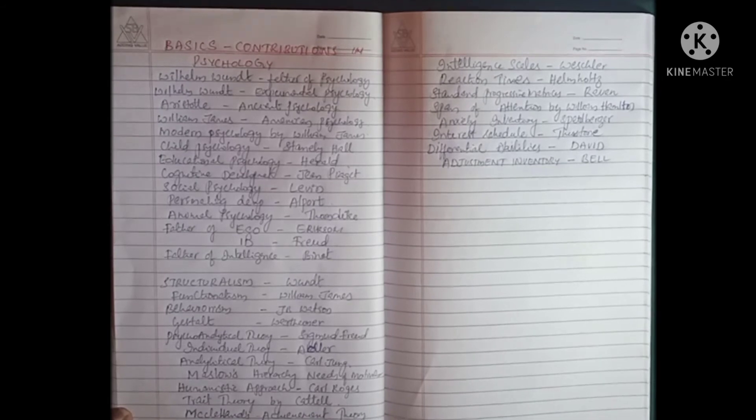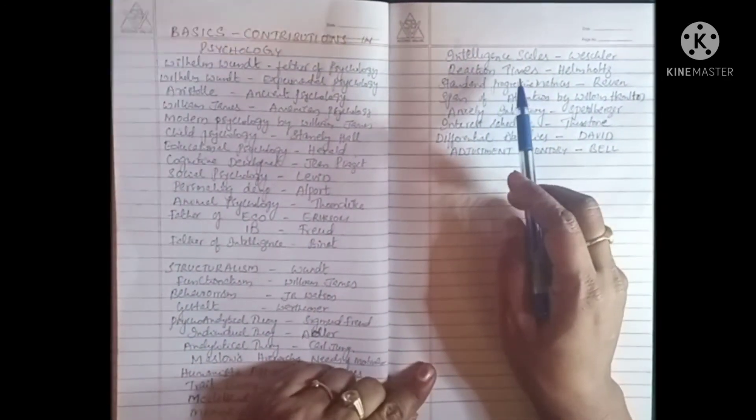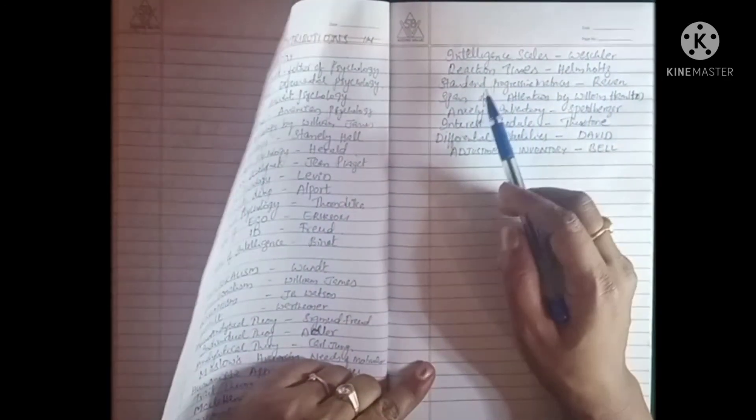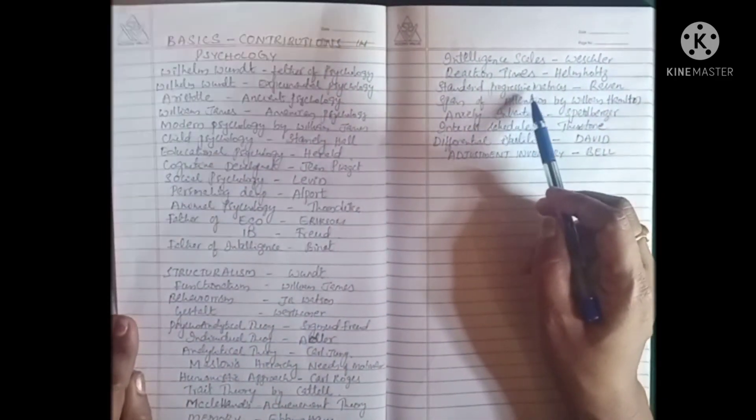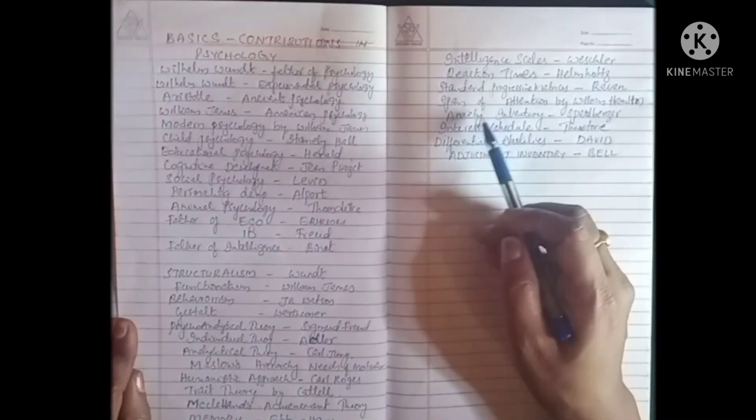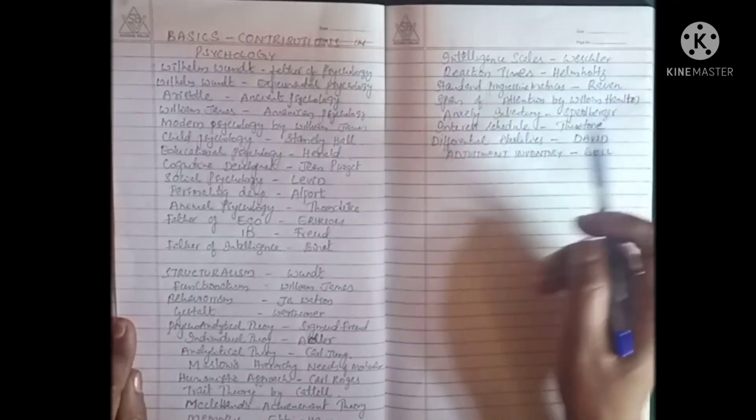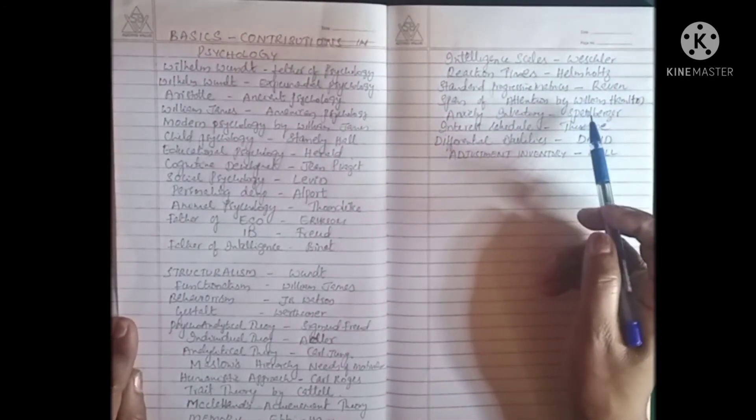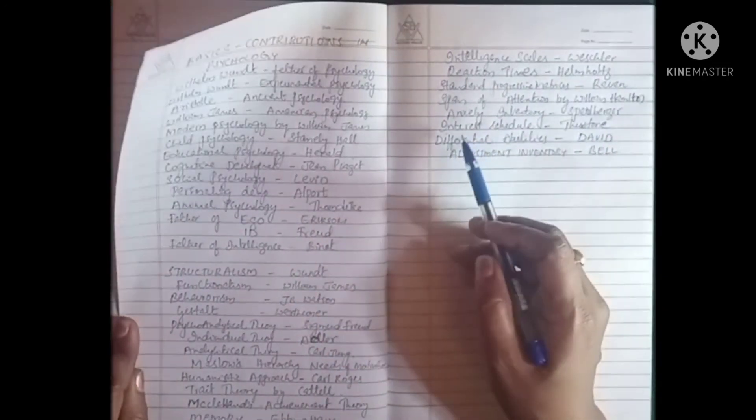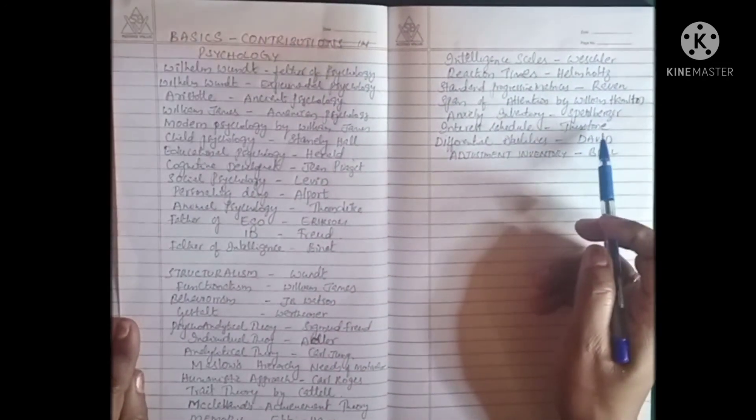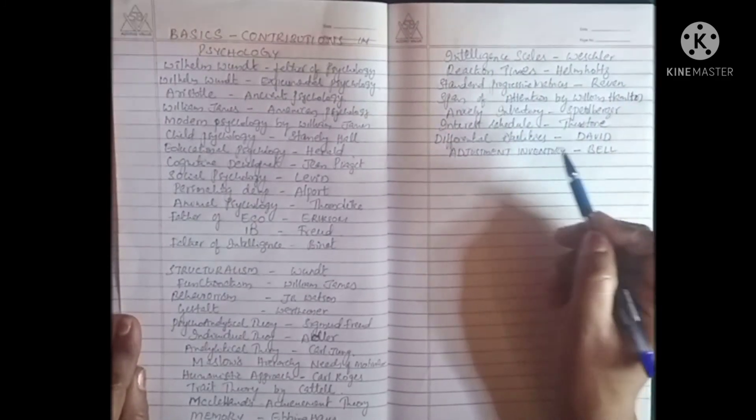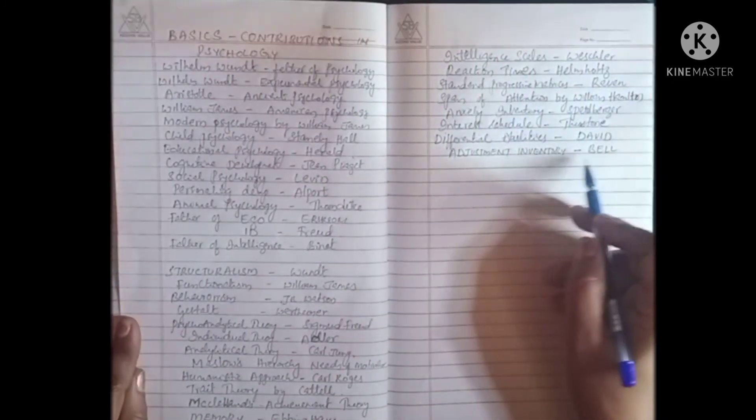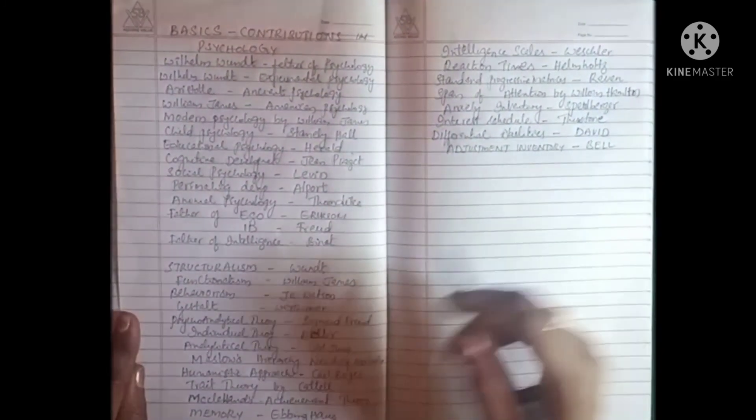Memory concept by Ebbinghaus. Intelligent skills by Wechsler. Reaction times by Helmholtz. Standard progressive matrices by Raven. Span of attention by William Hamilton. Anxiety inventory by Spielberger. Interest schedule by Thurstone. Differential abilities by David. Adjustment inventory by Bell. Thank you one and all.